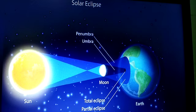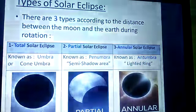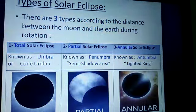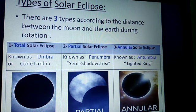During the rotation of the Moon, it will move farther from the Earth due to the oval shape of the orbit. In this case, the Sun appears as a lighted ring. This is known as the annular solar eclipse or Antumbra.